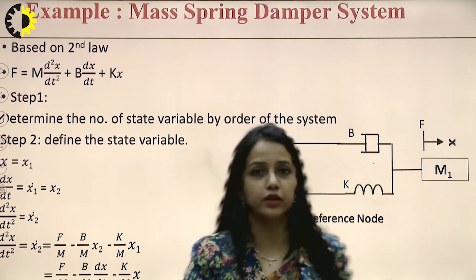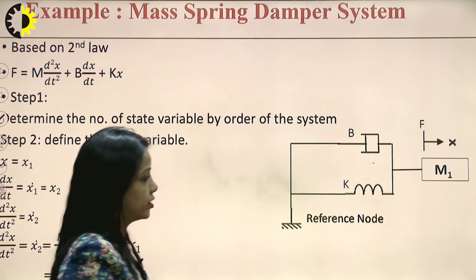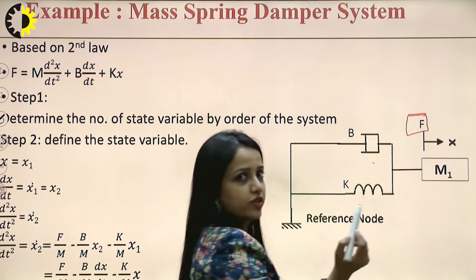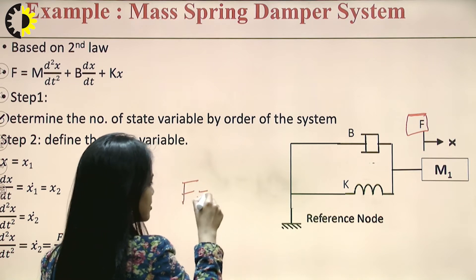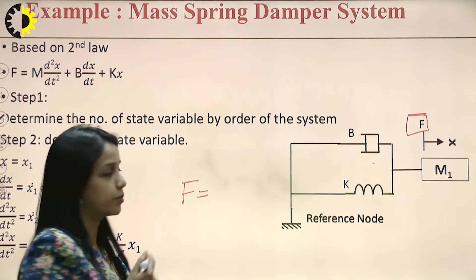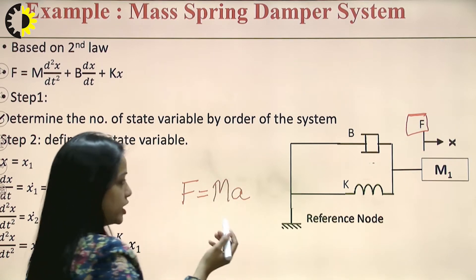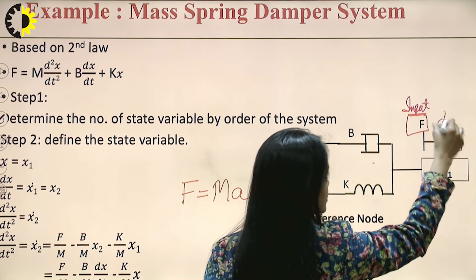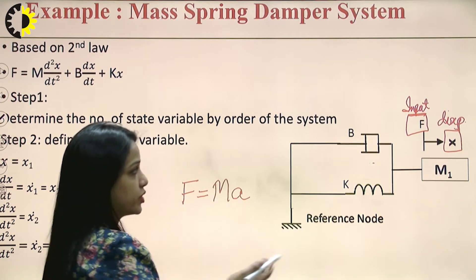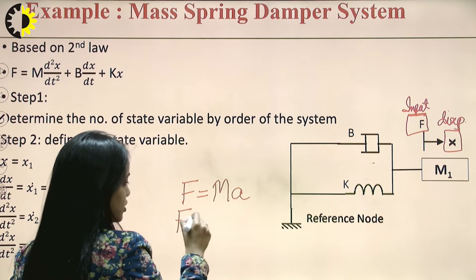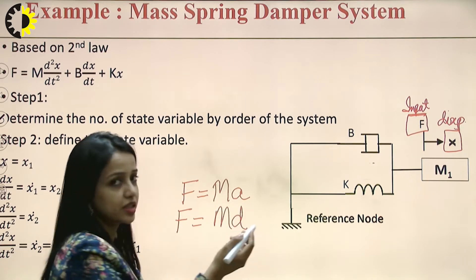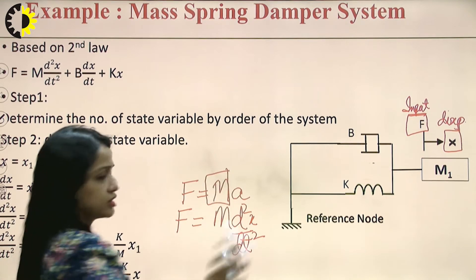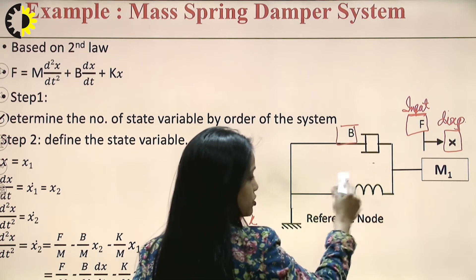Let us understand a mathematical model. The input is force F applied to mass m. According to Newton's law, F equals mA, so in terms of input and output, F is the input and x — displacement — is the output. We can relate F and x through Newton's second law: m times acceleration equals m times d²x/dt².